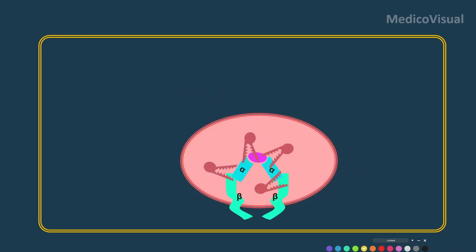If it fuses with the lysosome, the lysosome's special enzymes will destroy the proteins of this receptor — destroying the receptor as well as insulin. And this effect will be